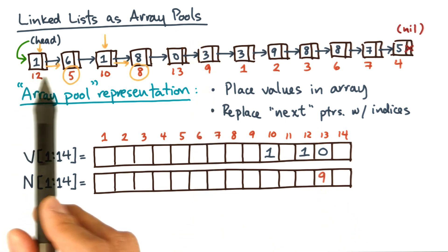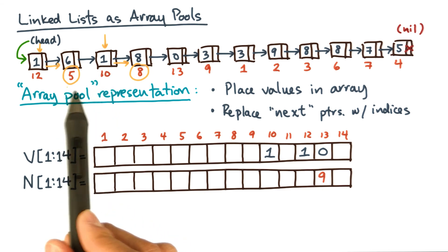For the two nodes whose value is 1, the successors are at positions 5 and 8. So we should put those in capital N as well.